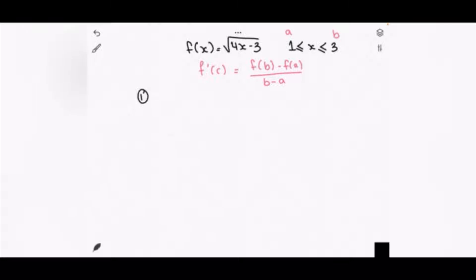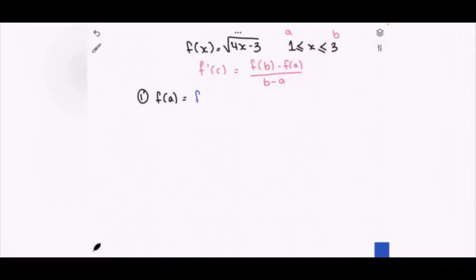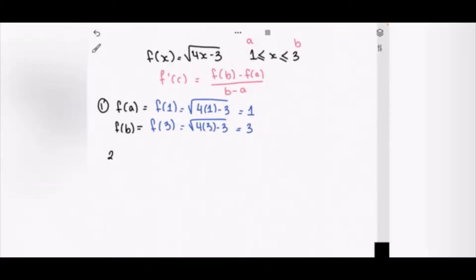Our first step is to find f(a) and f(b). So f(a) = f(1): we replace x by 1, giving √(4·1 - 3) = 1. And f(b) = f(3): √(4·3 - 3) = 3.